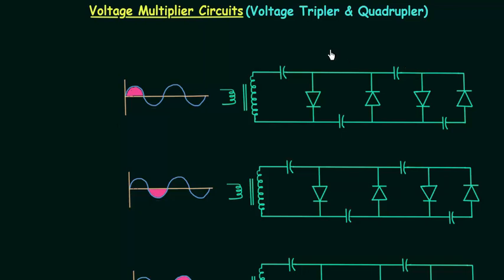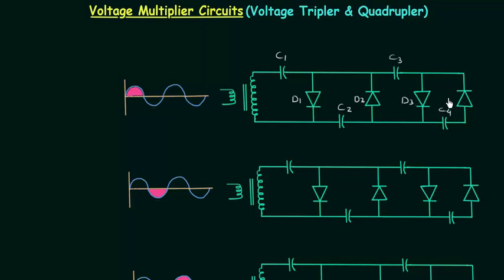Before analyzing this circuit in different half cycles, I will first name the diodes and capacitors used in this circuit. This capacitor is C1, this capacitor is C2, this capacitor is C3, and this capacitor is C4. This diode here is D1, this diode here is D2, this diode is D3, and the last diode is D4.